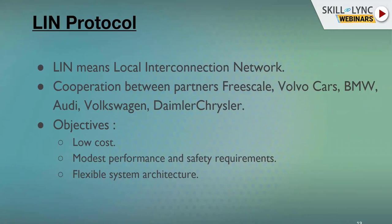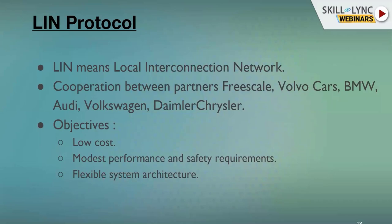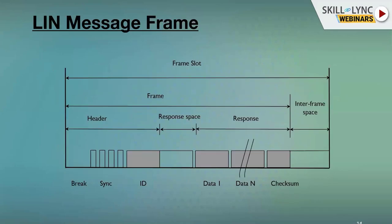In LIN, the master controls communication between master and slave. One master ECU controls, and many slave ECUs receive. The advantages include low cost, modest performance, modest safety requirements, and flexible system architecture. The main advantage of LIN is always cost, which you will appreciate when you work in the automotive industry.